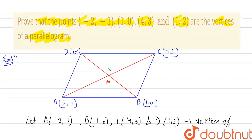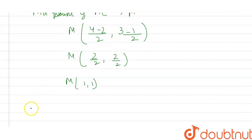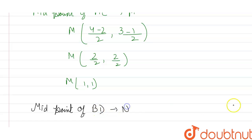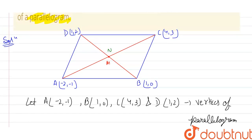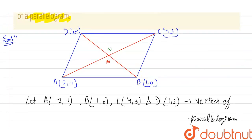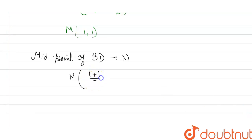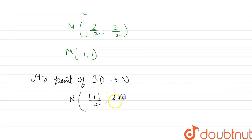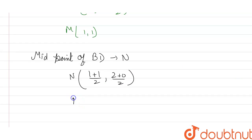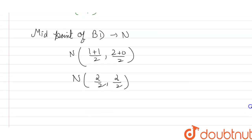Now let's find the midpoint of diagonal BD, and let's name this as N. The x-coordinate is (1 + 1) divided by 2. The y-coordinate is (2 + 0) divided by 2. So N equals 2/2 and 2/2, which gives N coordinate values as (1, 1).